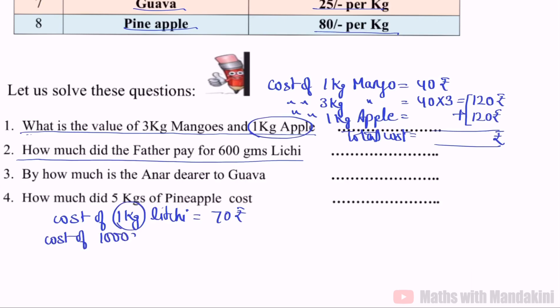Cost of 1 gram litchi, if we calculate, it means 70 upon 1000. And now we are asked for 600 grams litchi cost, so 70 upon 1000 into 600. Two zeros and two zeros cancel, one zero and one zero, seven sixes are 42 rupees is the answer.